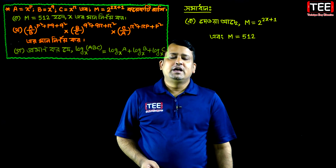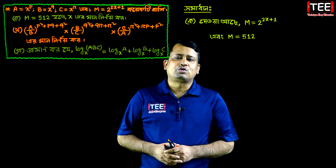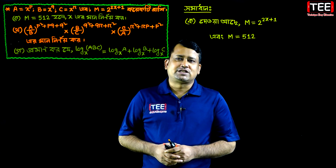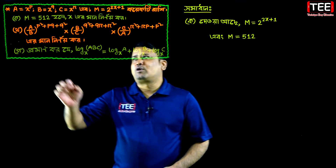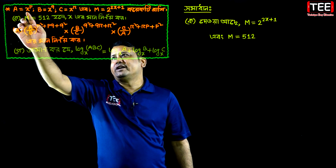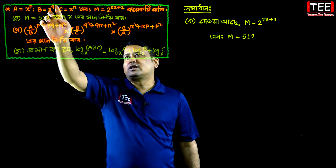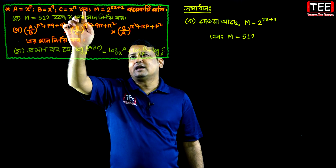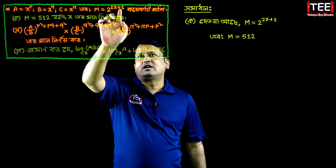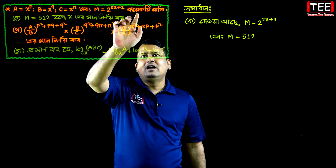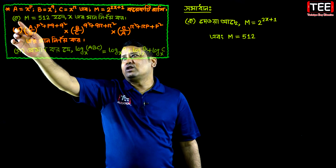It seems that the season shield will be the S.S.C. board in 2016. The season shield will be the S.S.C. board. So, let us see that A is equal to x to the power P, B is equal to x to the power Q, C is equal to x to the power R.